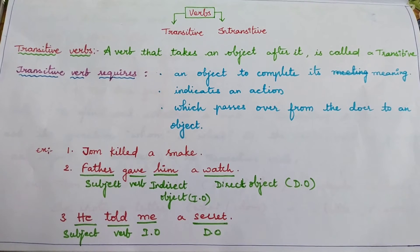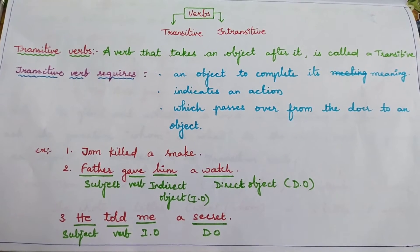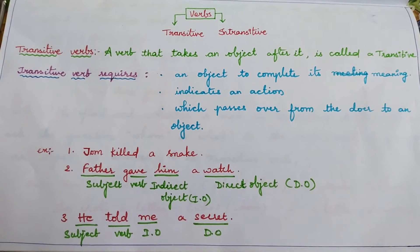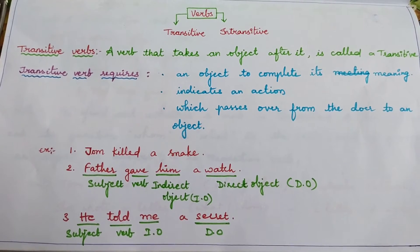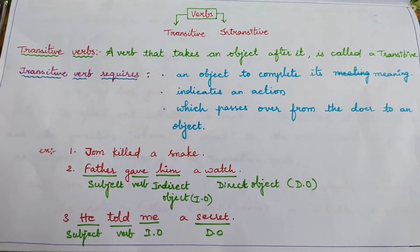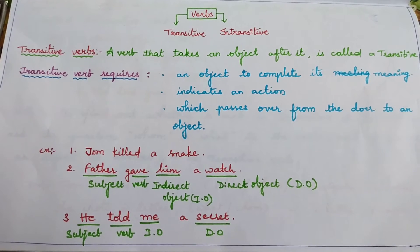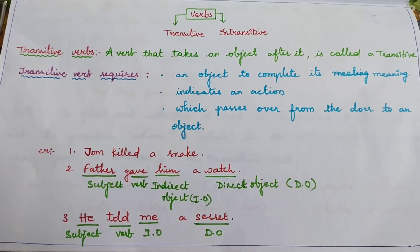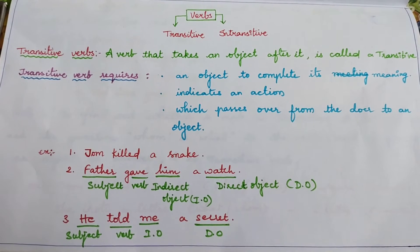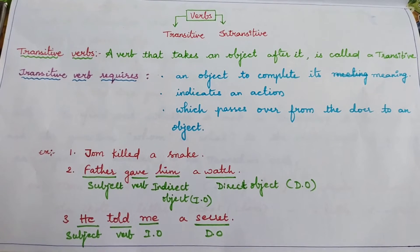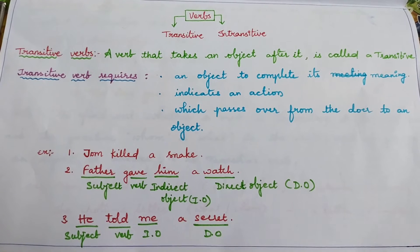Father gave him a watch. Giving is the action done by father. One who does the action will be called as subject. So giving action passes from father to him. That is called transitive verb. Here you are given with indirect and direct objects.